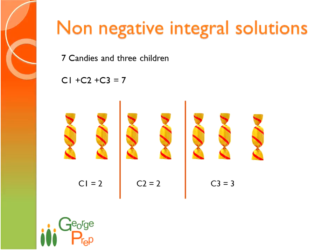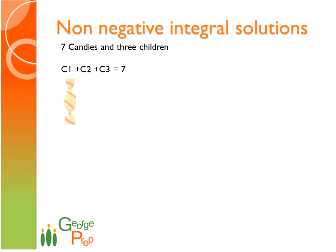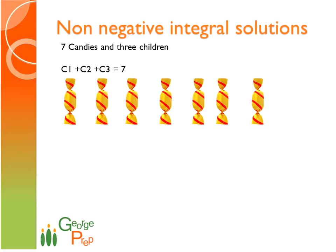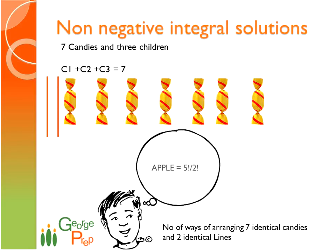But this is not the only way of placing these two lines. You can place them in so many ways. For example, the lines could be placed here and here — now the first child gets zero candies, the second child gets four, and the third child gets three. And there are so many other arrangements like this possible. So what does it finally boil down to? We have seven candies and two lines, which boils down to the number of ways of arranging seven identical candies and two identical lines. Does it sound familiar? It is similar to this question — number of ways of arranging the letters of the word APPLE.